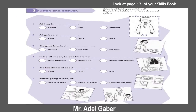Look at page 17 of your skills book, activity 3, listen and answer. You are going to hear Ali talking about himself. Choose the correct option for each statement and shade in the appropriate bubble. Now listen and choose.